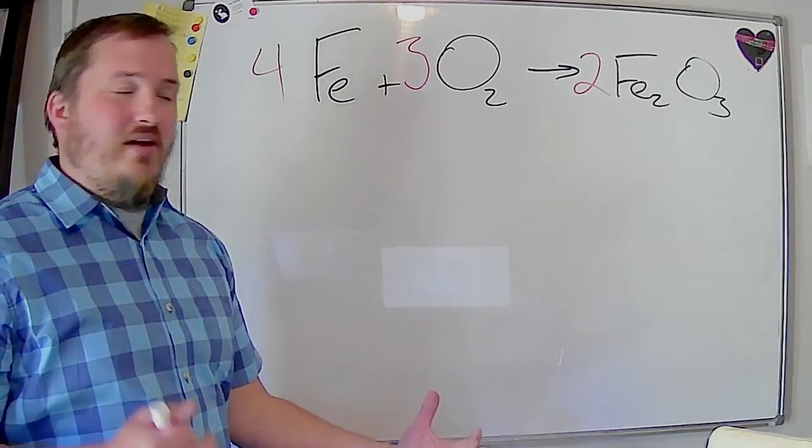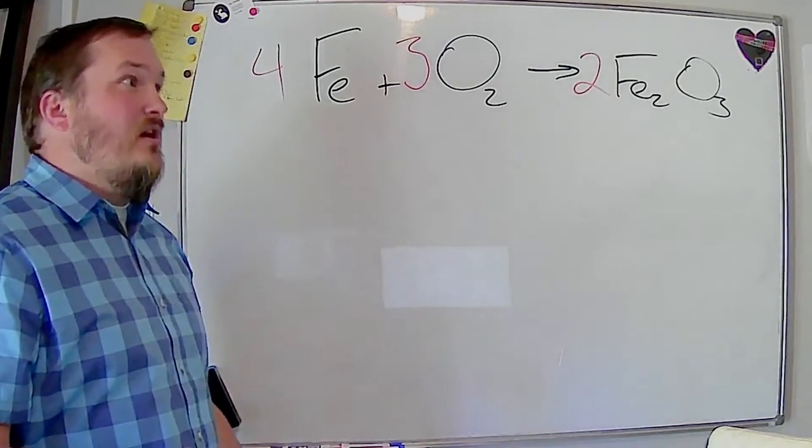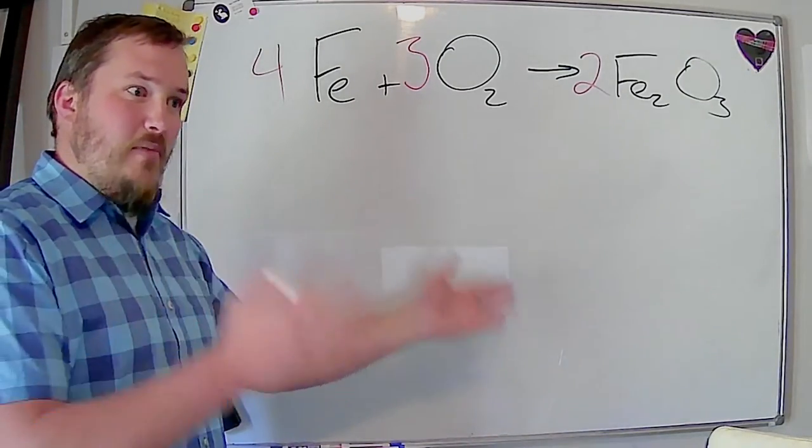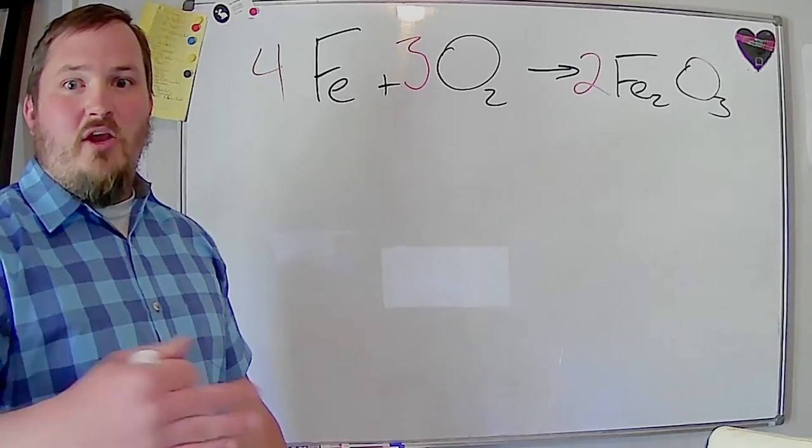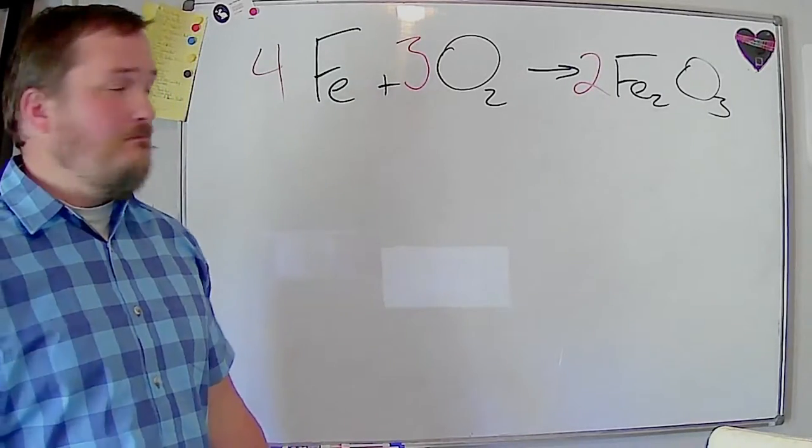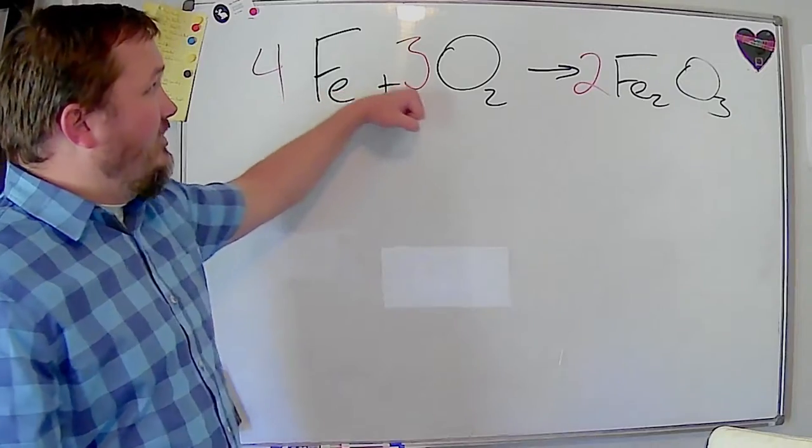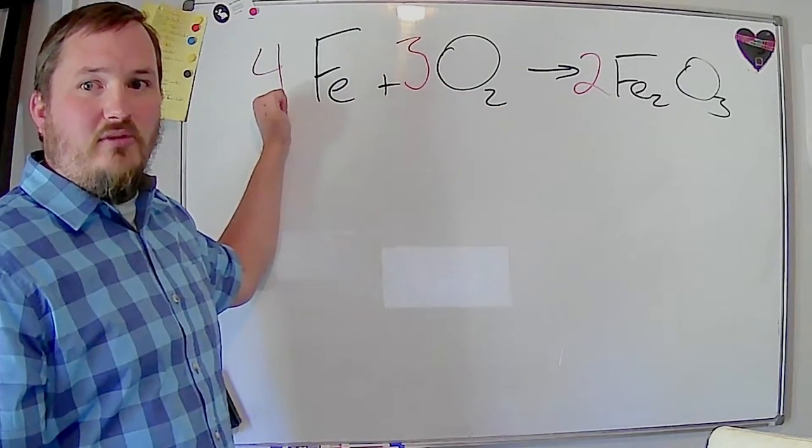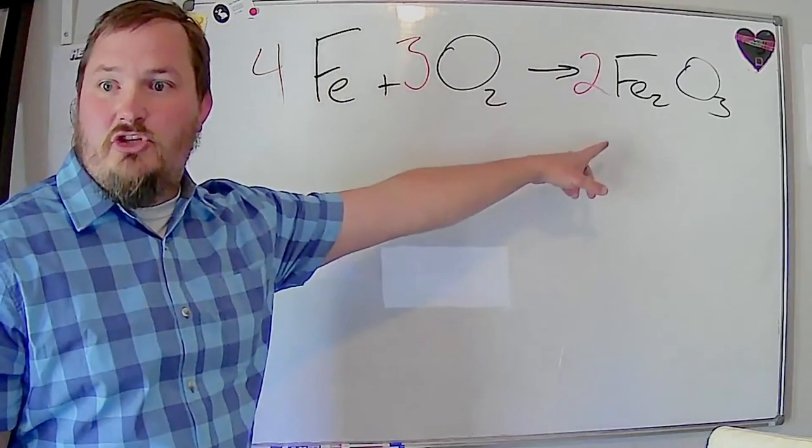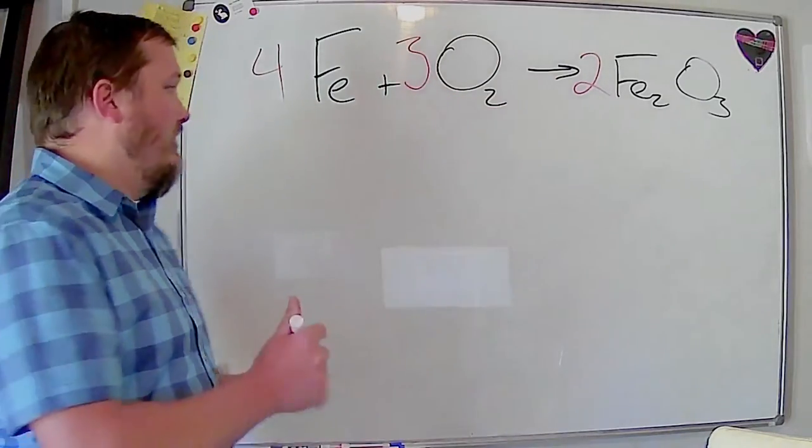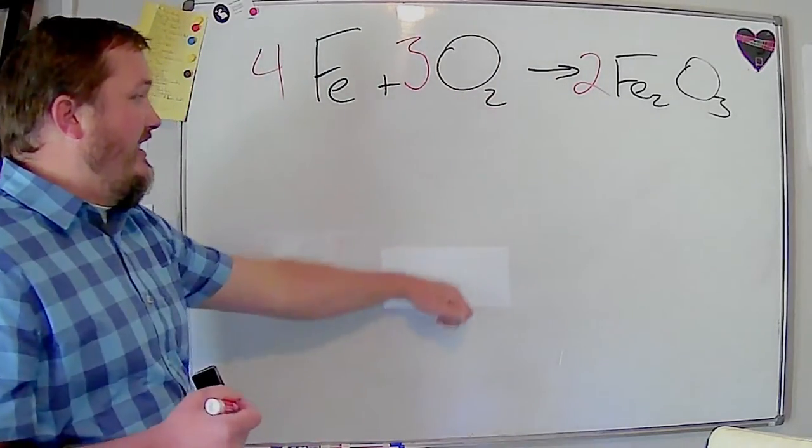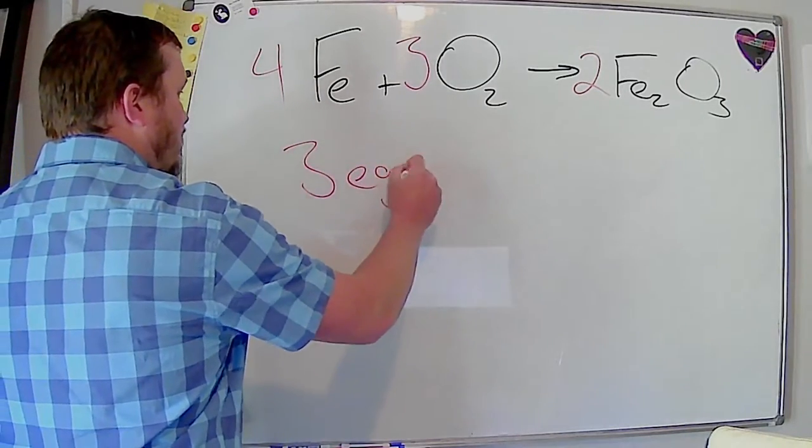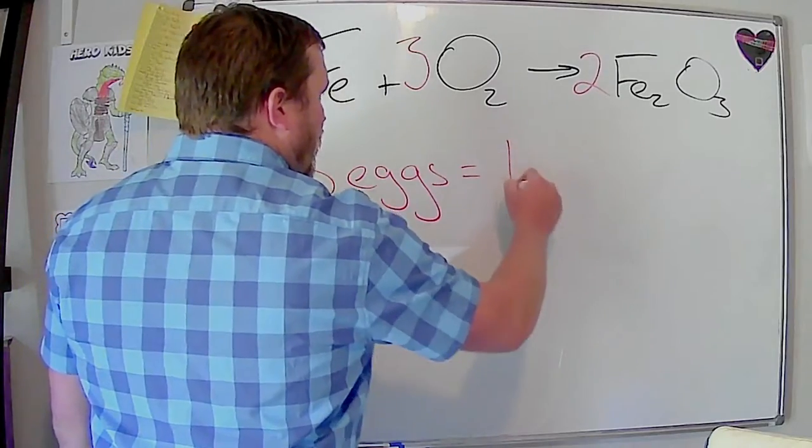If you're cooking in a kitchen and you have a certain recipe that says three eggs equals one omelet. Every time you make, you mix three eggs together, you can make one omelet with that. That's really what these coefficients are going to tell us as well. It's saying every time I use four moles of iron, I can make two moles of product, which means we can write that as a conversion the same way we can write three eggs equals one omelet.